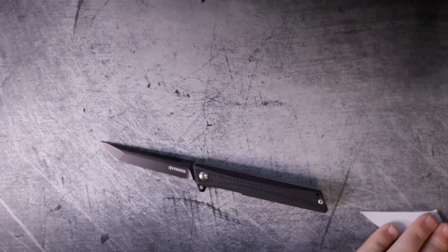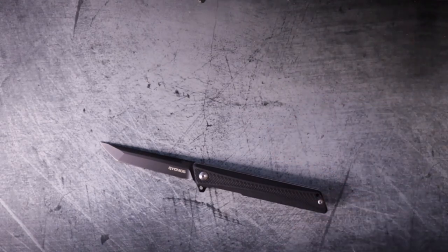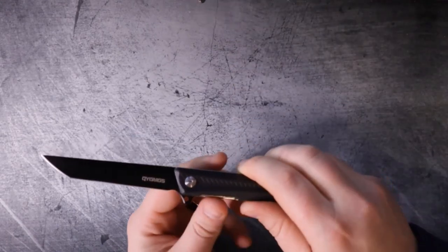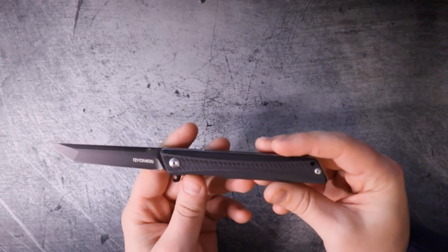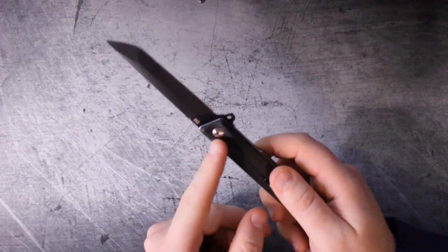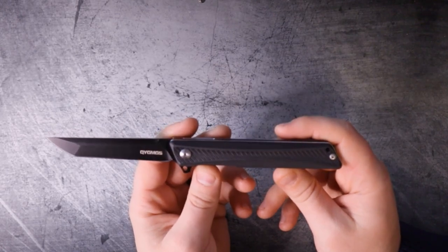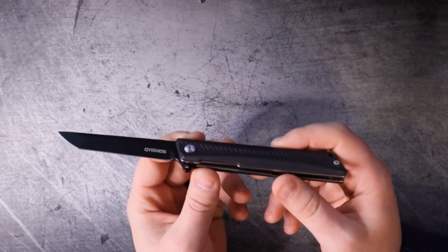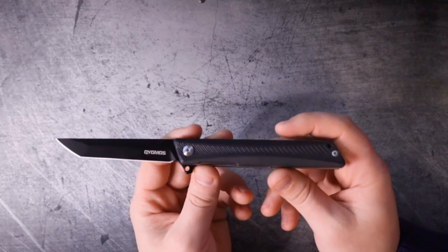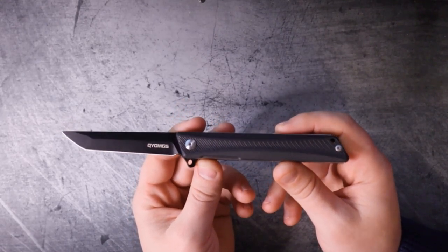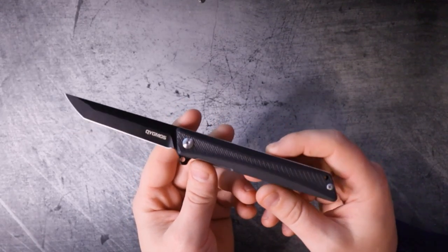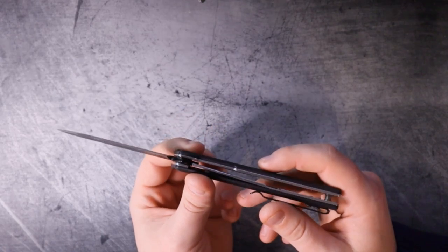More specs. This one is using D2 steel, which I know is not everyone's favorite. And it is ceramic ball bearings. Remember that, ceramic ball bearings. So D2 steel is not everyone's favorite, but it's right in line with the price point. You can currently pick this up on Amazon for about 42 bucks.